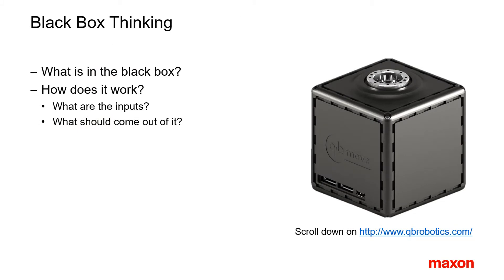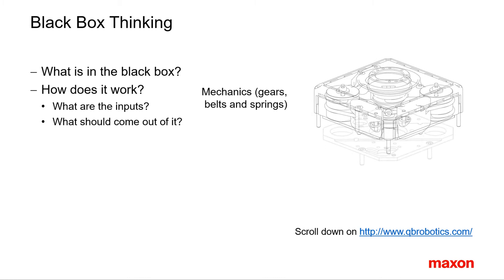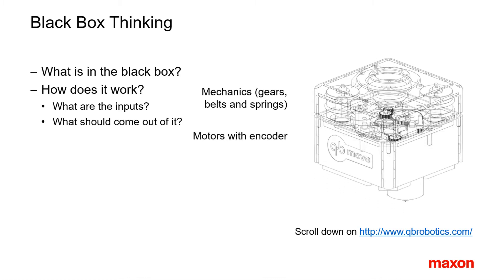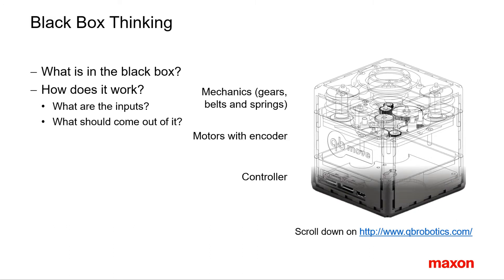Looking at the application as a black box can be a reasonable approach for a system whose components have yet to be defined. Hence, the first question to answer is not what is in the box, but what are the inputs, what should come out, and how does it work? This black box here is a tunable elastic robotic joint. It has all kinds of ingredients; however, during analysis of the application task, we are rather interested in the interfaces.